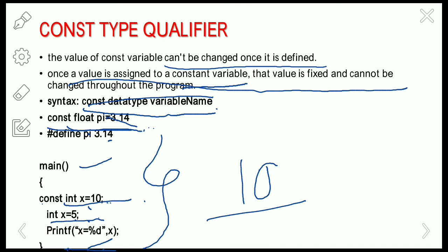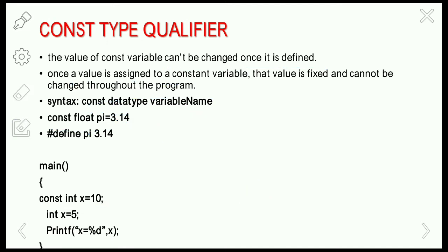Instead of using the const keyword, you can also use the #define directive to define a variable that won't change throughout the program. For example, you can define the pi value as 3.14 using #define. This is an alternate for the const type qualifier.